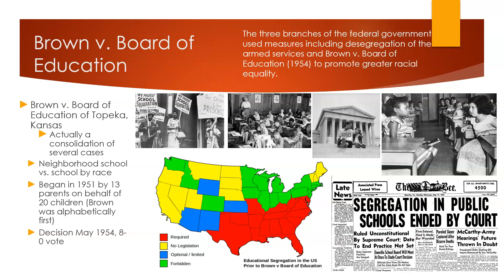The court ordered desegregation to proceed with, quote, all deliberate speed, unquote, although no specific timetable was set. Despite the order, few schools were integrated and there was massive public resistance, with some states even closing down their public schools for a short time. By 1960, less than 4% of children attended an integrated school, particularly in the southern states.